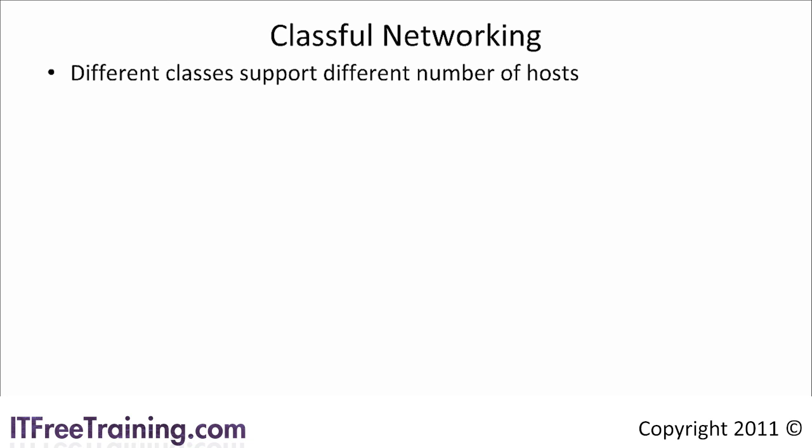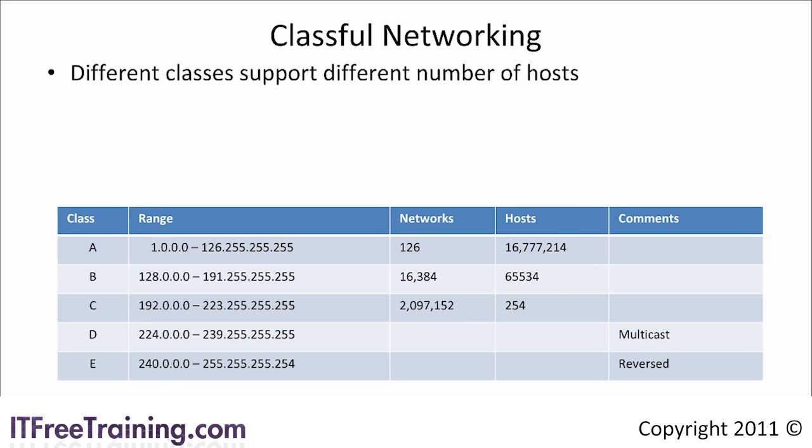Originally, all IP addresses were allocated based on a class. The class used determines the number of hosts that can be deployed on that network. Today, classless networks have become more common. The remnants of classful networking still exist and are often referenced in networking discussions, so it is an important topic to know. The first class, class A, supports 16,777,214 hosts, available in 126 networks.